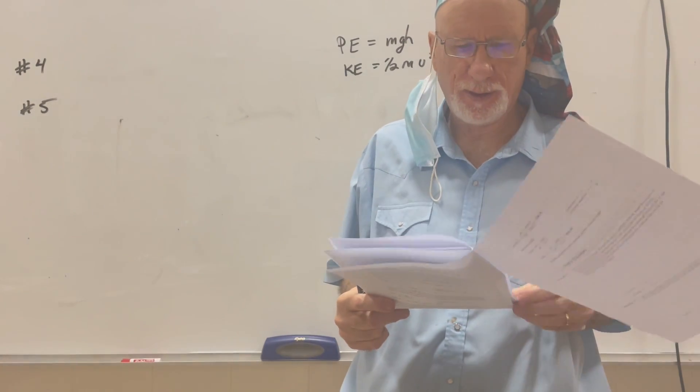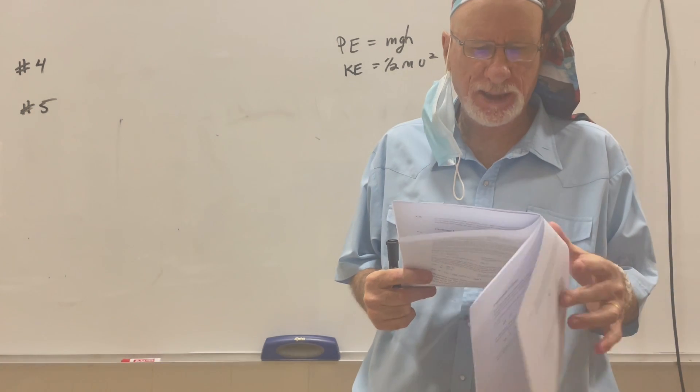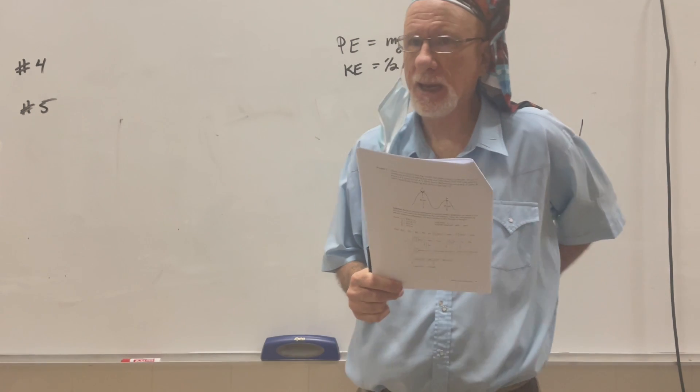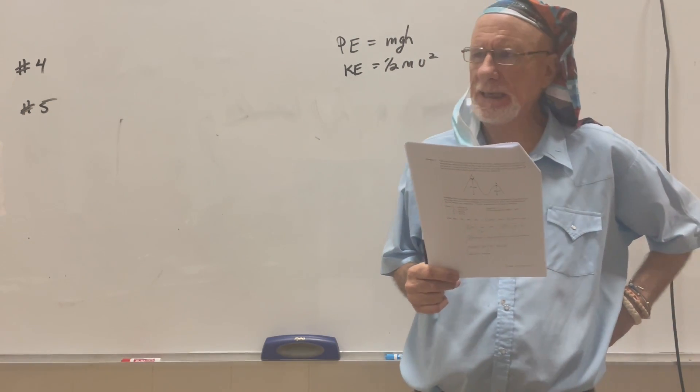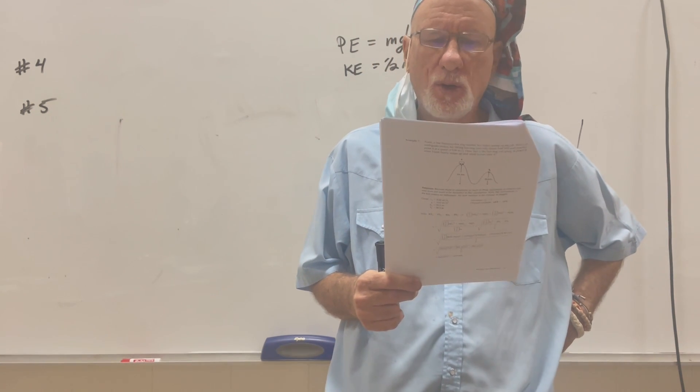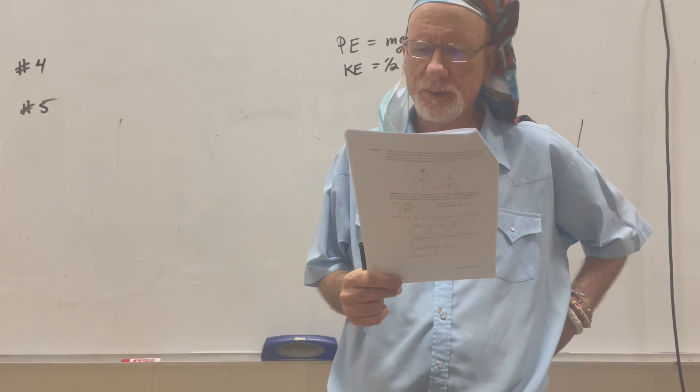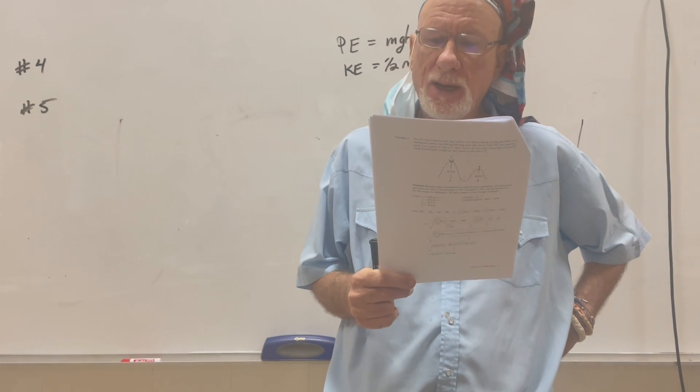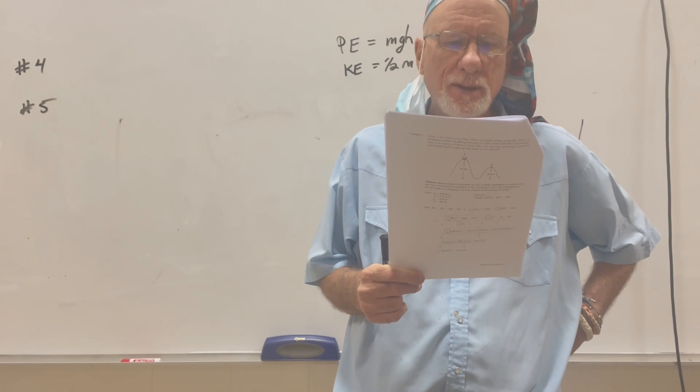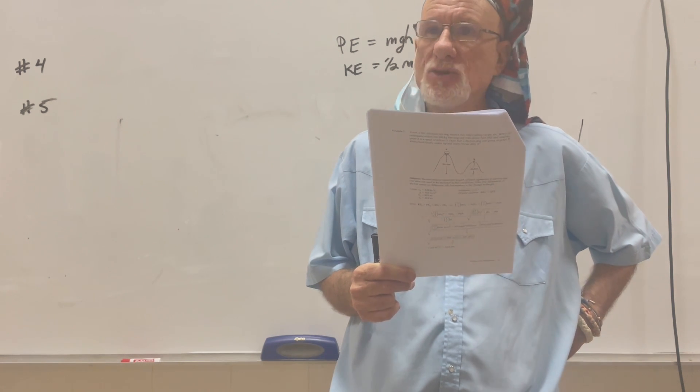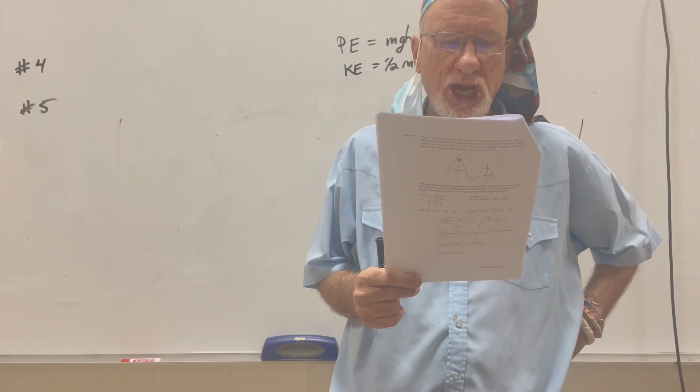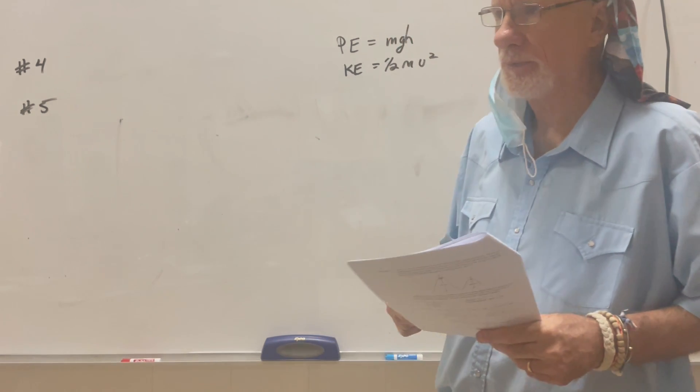We open up with Exercise 5. Exercise 5, as it is said, it is said that Galileo dropped objects off the Leaning Tower of Pisa to determine whether heavy or light objects fall faster. If Galileo had dropped a 5-kilogram cannonball to the ground from a height of 12 meters, what would have been the change in kinetic energy? Okay.